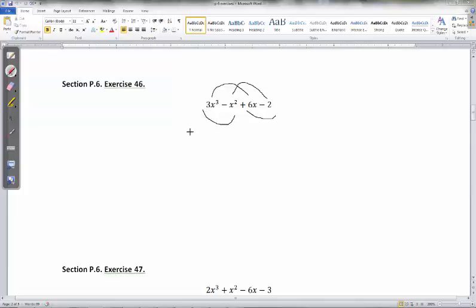What you do is you just pull common factors out of each group. From the first group, I have an x squared common. If I take out x squared, I will have 3x minus 1. And from the second group, I have a 2 common. So if I pull out a 2, I will have 3x minus 1.